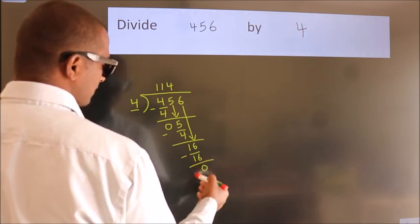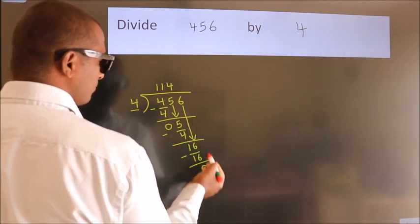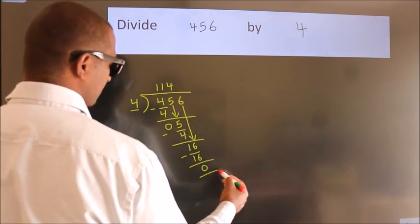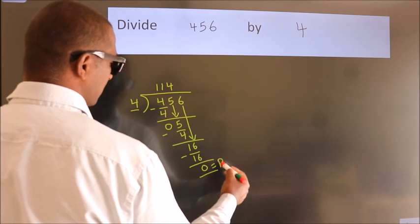After this, no more numbers to bring it down. So we stop here. This is our remainder. This is our quotient.